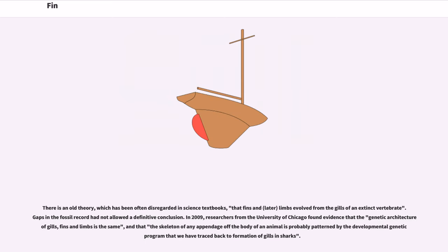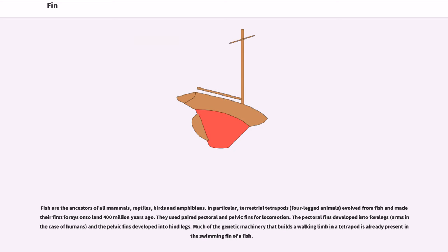There is an old theory, often disregarded in science textbooks, that fins and later limbs evolved from the gills of an extinct vertebrate. In 2009, researchers from the University of Chicago found evidence that the genetic architecture of gills, fins, and limbs is the same, and that the skeleton of any appendage is probably patterned by the developmental genetics program traced back to the formation of gills in sharks. Fish are the ancestors of all mammals, reptiles, birds, and amphibians. Terrestrial tetrapods — four-legged animals — evolved from fish and made their first forays onto land 400 million years ago. They used paired pectoral and pelvic fins for locomotion; the pectoral fins developed into forelegs (arms in the case of humans), and the pelvic fins developed into hind legs. Much of the genetic machinery that builds a walking limb in a tetrapod is already present in the swimming fin of a fish.